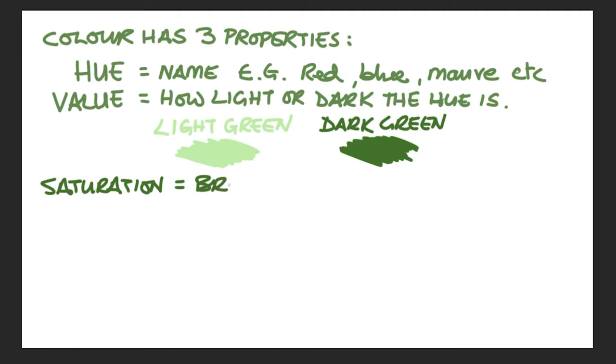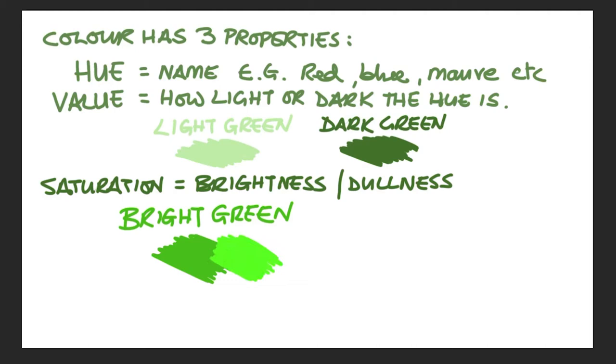And thirdly we have saturation. Saturation is the one that's mostly misunderstood and confused with value. Saturation refers to how bright a color is, the intensity of the color. So is it a very bright green or is it a very dull green? So you can have high value, low value, or mid value. But they're all bright green. They have an intense color.